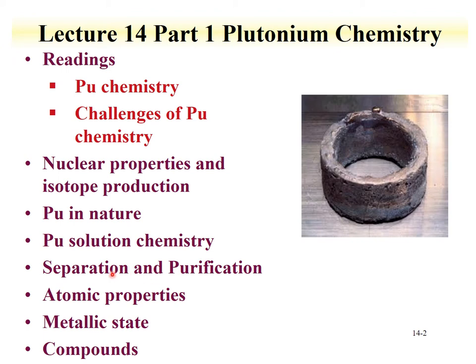We're going to end part one talking about the atomic properties of plutonium. Here we see an example of a ring of plutonium, made from an electrochemical process where plutonium is formed in a molten salt. The melting point of plutonium metal is relatively low, and it can drip off the electrodes and form into rings. They form plutonium into rings for criticality safety — if this is plutonium-239, one way of preventing it from undergoing fission is to have a shape with a very high surface area.